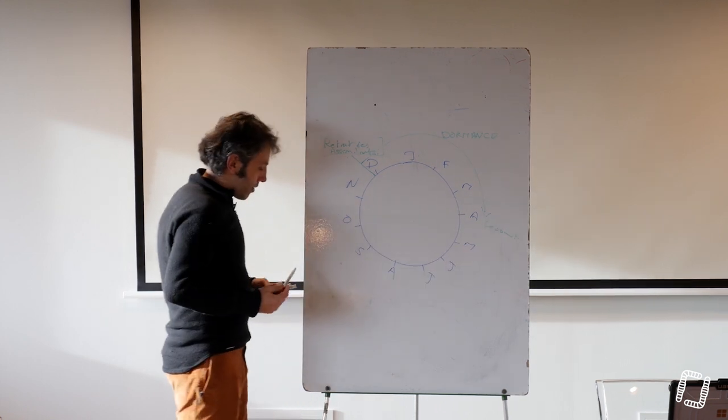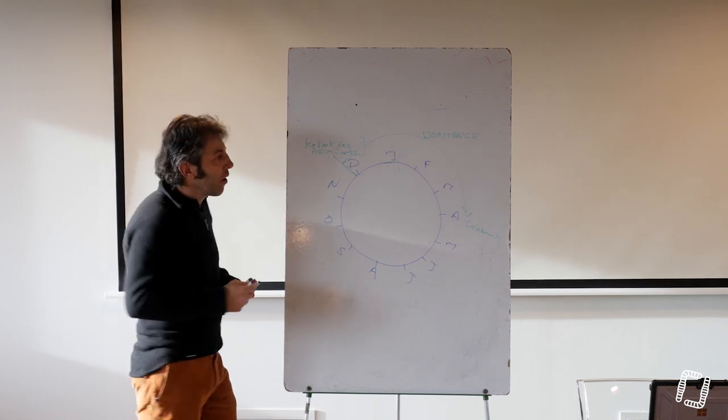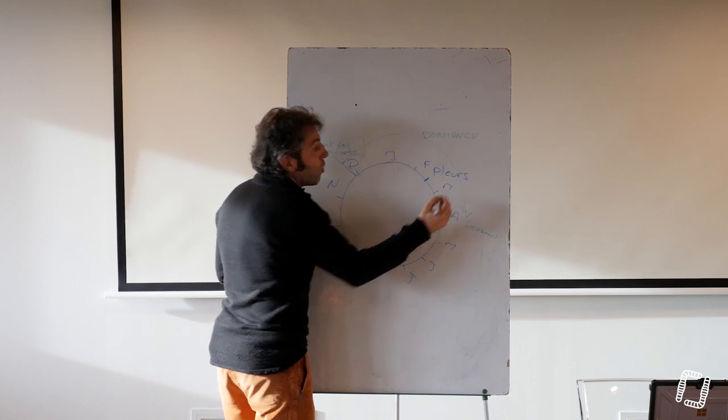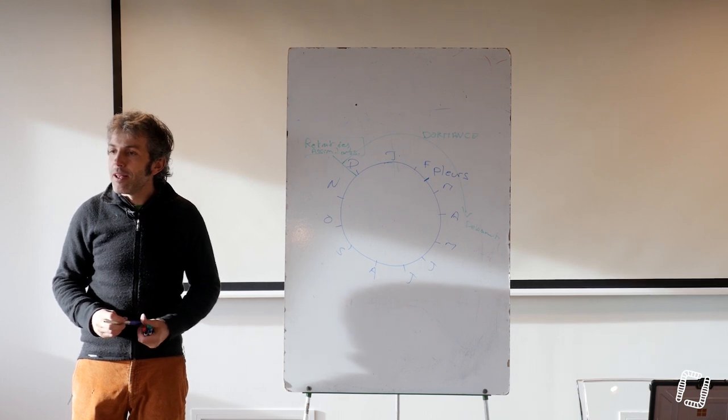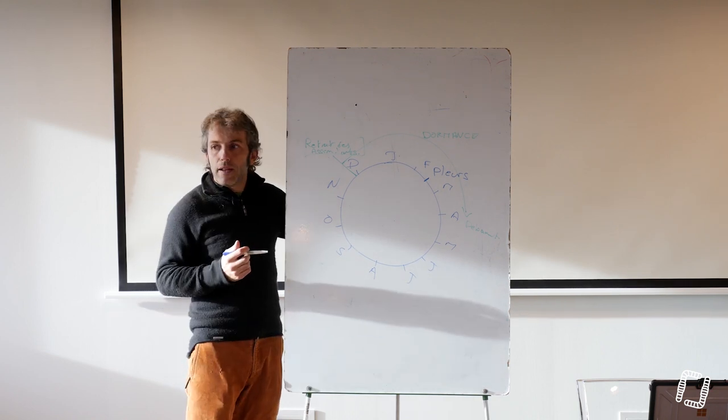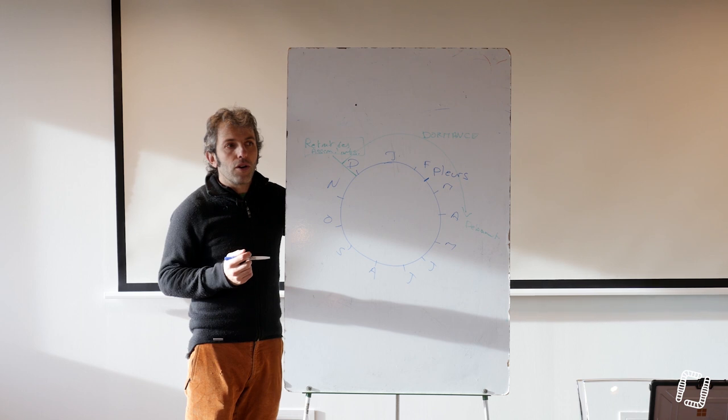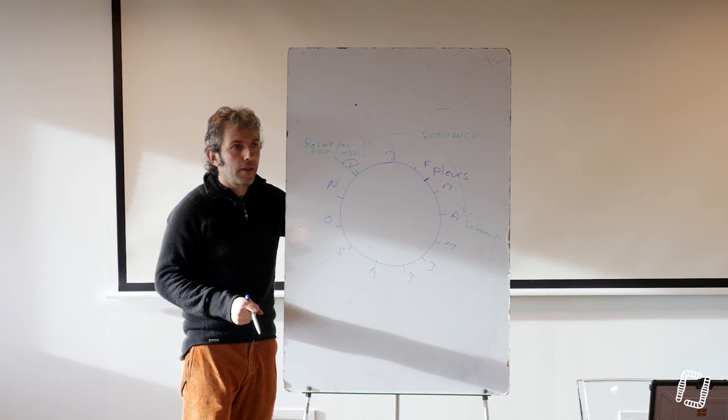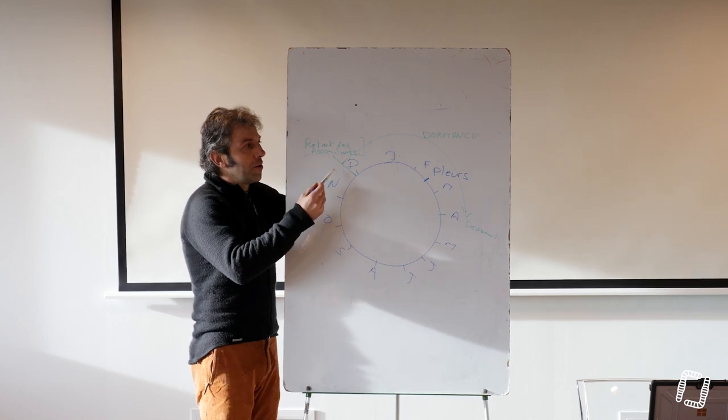Vous avez quoi au mois de février qui se passe dans la plante quand vous taillez? Les pleurs, oui. Les pleurs, là, c'est le janvier. Est-ce que vous vous rappelez l'année dernière, ça avait même pleuré au mois de décembre? Ça n'a pas arrêté l'année dernière.